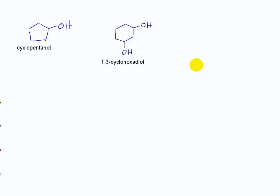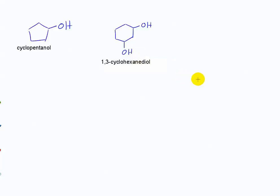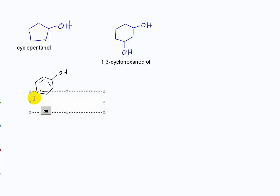The 1,3 tells you the positions — if they were next to each other it would be 1,2; apart from each other, 1,4. Those are the only cyclohexanediols. What about this one? This is phenol. Alcohols and phenols have various properties and we'll talk about some different ones.